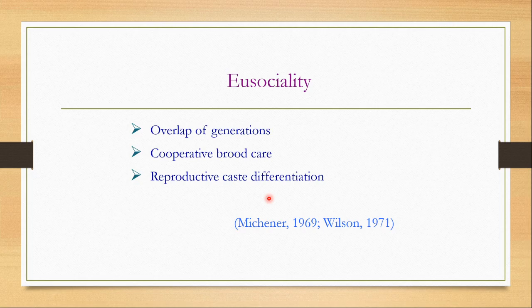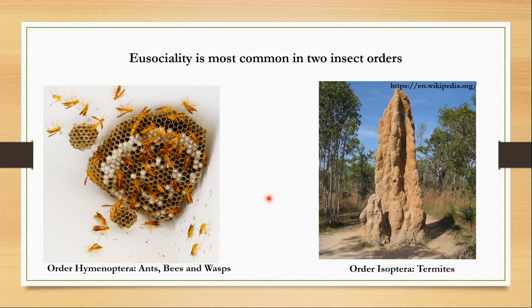They should also show reproductive caste differentiation, wherein one or a few individuals would reproduce or lay eggs, while the majority of individuals would refrain temporarily or permanently from reproduction and would help the reproductives in laying eggs and taking care of them. All termites are eusocial, and eusociality is found not only among termites but also in order Hymenoptera among the ants, bees and wasps. But all species under order Hymenoptera are not social — you can also find solitary and parasitic species there, whereas all termites are social.